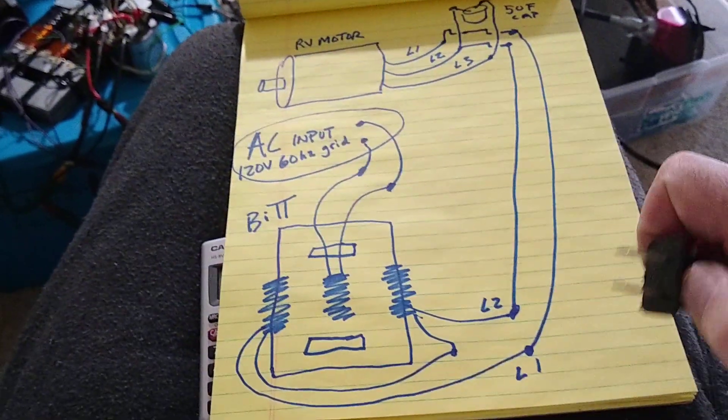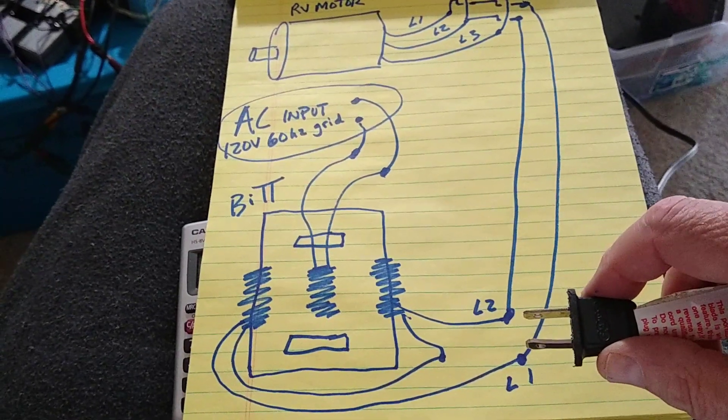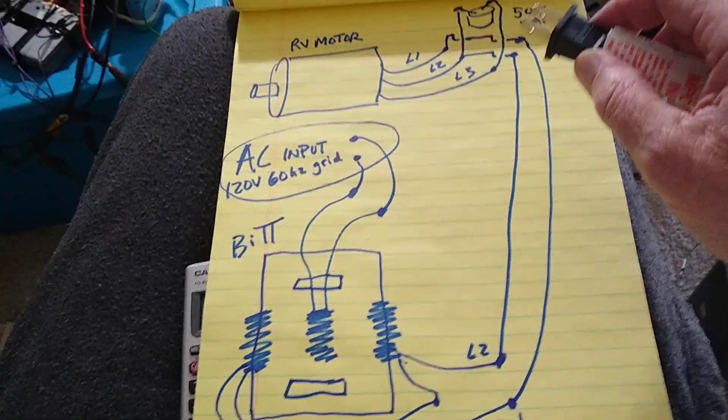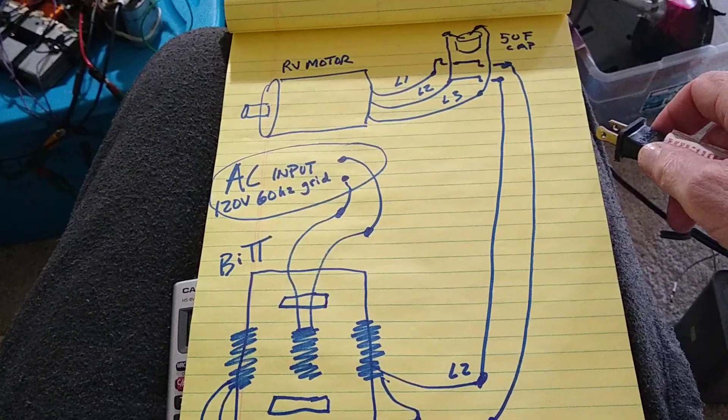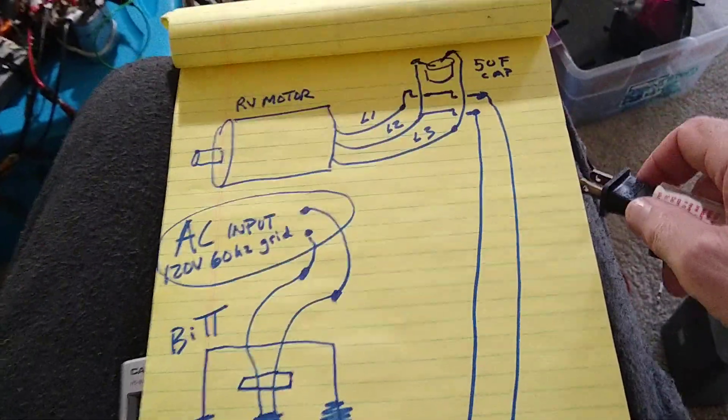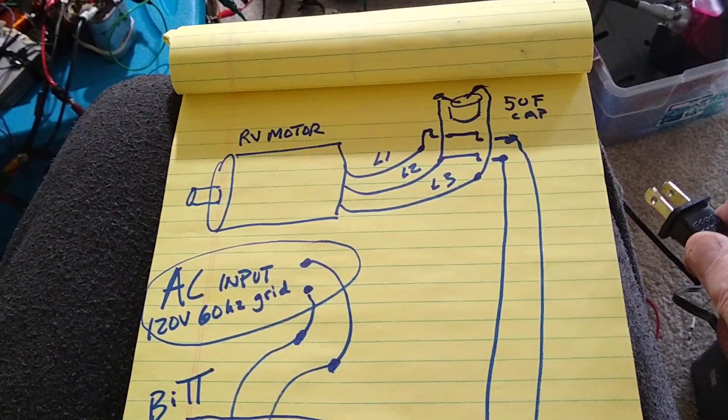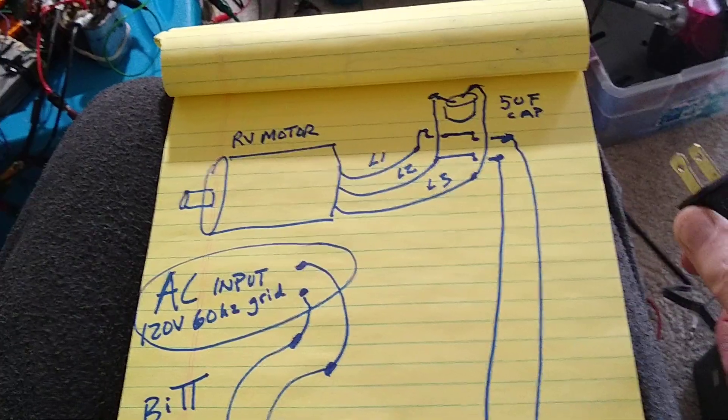And the secondaries are in series. The secondaries output goes right into the rotaverter motor here. L1 and L2 connect to L1 and L2 up here.